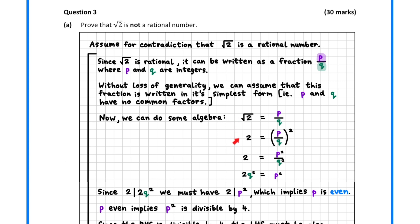Squaring both sides and rearranging tells us that 2q squared equals p squared. The left hand side has a factor of 2, and hence is divisible by 2. It follows that the right hand side must be divisible by 2 also. This implies that p is even.